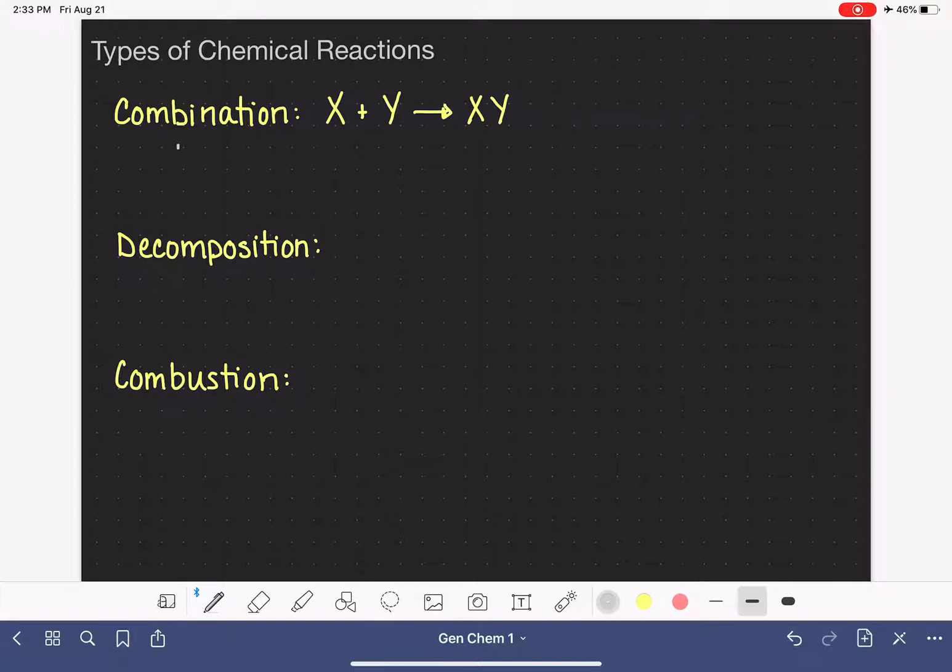Here's an example of a combination reaction: H2 combining with O2 to make H2O. You might notice two things about what I just wrote. First of all, I left some pretty big empty spaces there, and second of all, you might notice it's unbalanced.